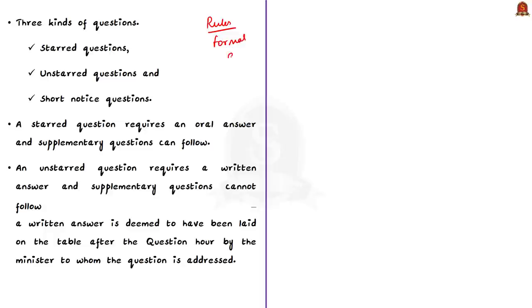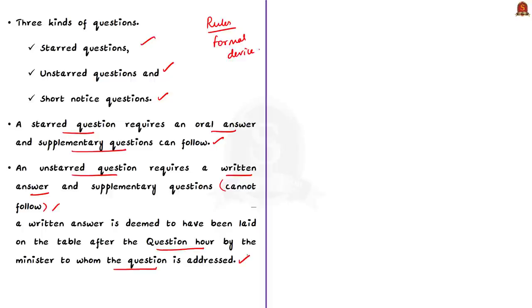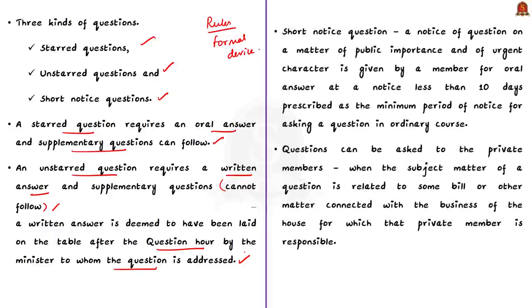There are three kinds of questions: starred questions, unstarred questions, and short notice questions. A starred question requires an oral answer and therefore supplementary questions can follow. An unstarred question requires a written answer and therefore supplementary questions cannot follow — a written answer is deemed to have been laid on the table after the question hour by the minister. A short notice question is one where a member gives notice on a matter of public importance and urgent character for oral answer at notice less than 10 days.